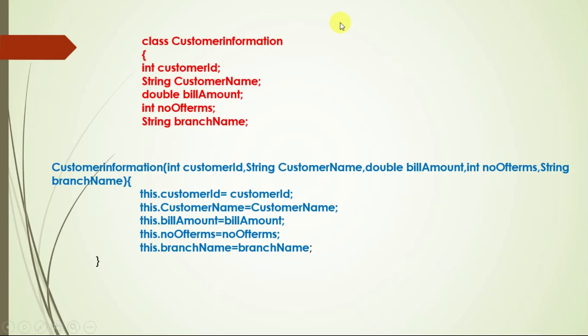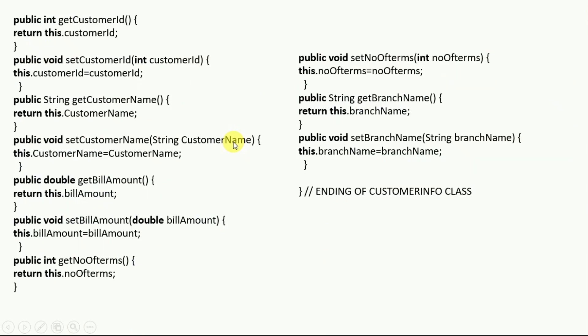Next, create the CustomerInformation class, declare all variables and attributes, and create a parameterized constructor to initialize all attributes for data matching purposes. If you have time, I recommend creating getter and setter methods as the question may ask for them.